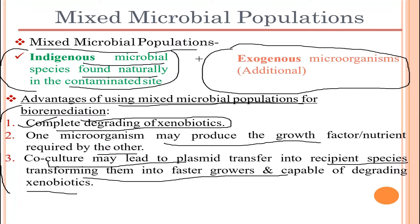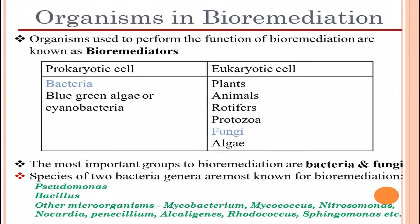One microorganism may produce growth factors and nutrients required by others, helping them survive longer and degrade more contaminants. Co-culture leads to plasmid transfer into the recipient species, transforming them into faster growers capable of degrading xenobiotics. Plasmid transfer helps modify and enhance their features for better degradation of xenobiotics.